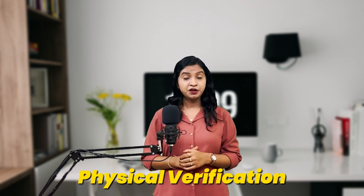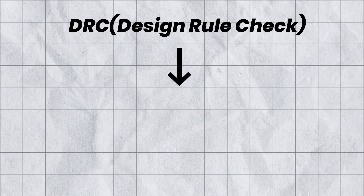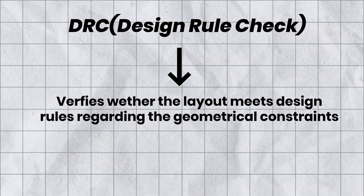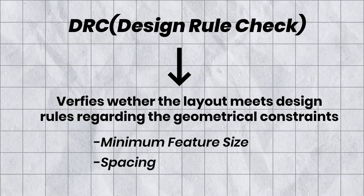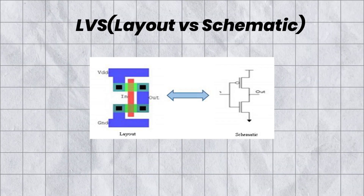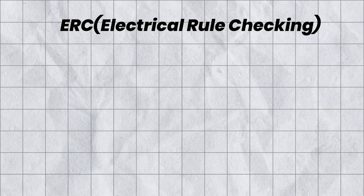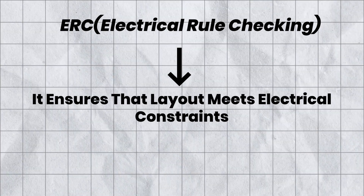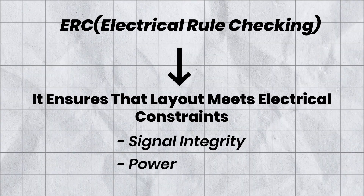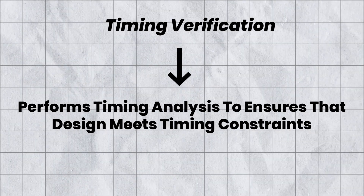Finally, coming to physical verification, which ensures that the layout follows all the design rules and is manufacturable. We perform DRC, LVS, ERC, and timing verification. DRC — design rule check — verifies whether the layout meets foundry design rules regarding geometrical constraints like minimum feature size, spacing, overlap, etc. LVS — layout versus schematic — verifies the correspondence between the physical layout and the schematic representation to ensure correctness. ERC — electrical rule checking — ensures that the layout meets electrical constraints like signal integrity, power, and reliability. Timing verification performs timing analysis to ensure the design meets timing constraints after physical implementation.